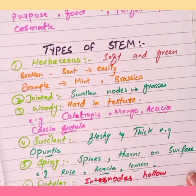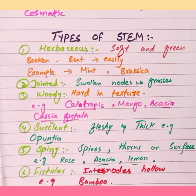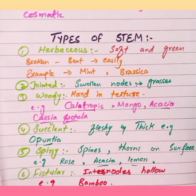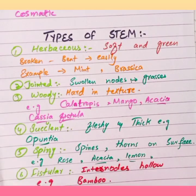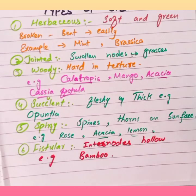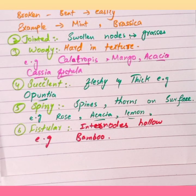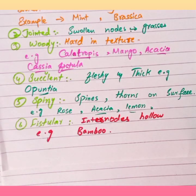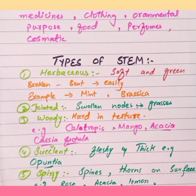To summarize, the six types of stem are: herbaceous stem — soft and green, easily broken and bent, e.g., mint and brassica; jointed stem — nodes are swollen, e.g., grasses; woody stem — hard in texture, e.g., Calotropes, mango, and acacia; succulent stem — fleshy, juicy, and thick, e.g., Opuntia; spiny stem — e.g., acacia or lemon; and fistular stem — internodes hollow, e.g., bamboo. Thanks for watching.